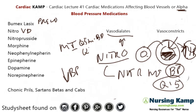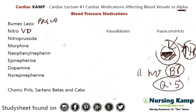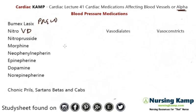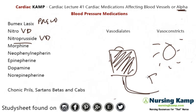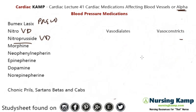Next is nitroprusside, which works specifically on the peripheral vasculature and it dilates — like nitro. We call it 'night pride' because it needs to be in a brown bag and kept away from sunlight, as light affects the medication. It needs to be in a dark bag, and you need to check blood pressure because it vasodilates. Next is morphine, which is just like Lasix in that it works on the preload, but it doesn't necessarily vasodilate — it just works on the workload of the heart coming in.